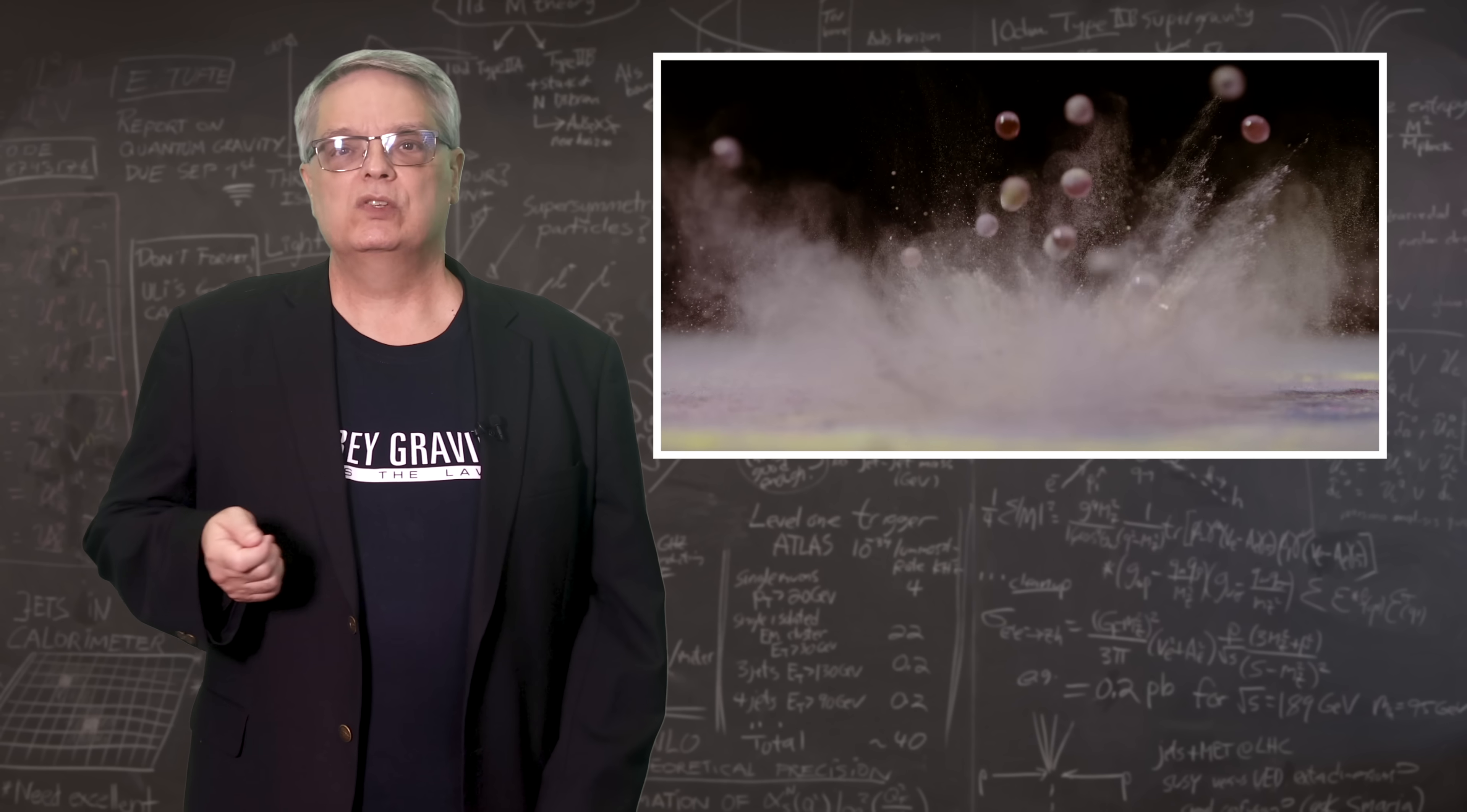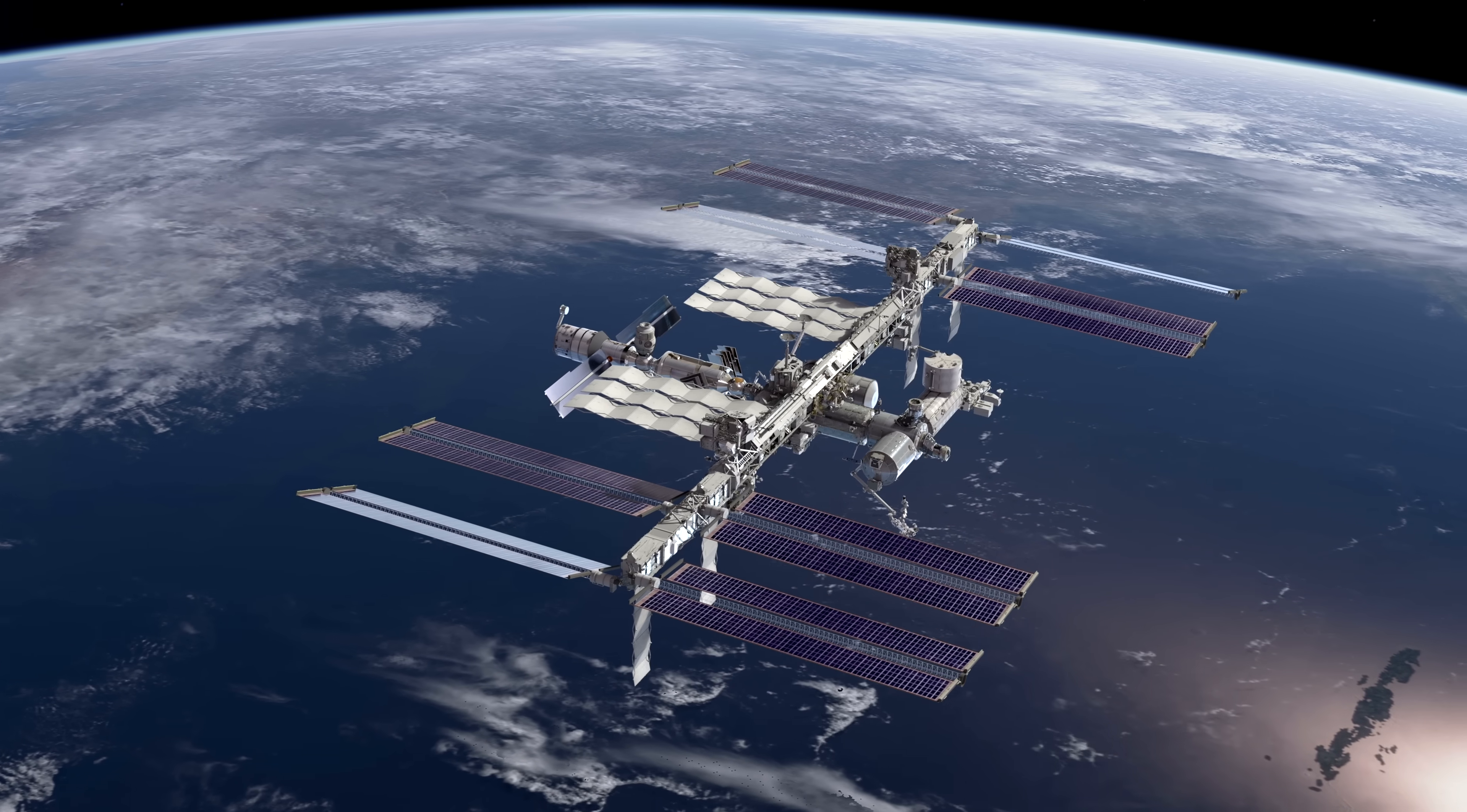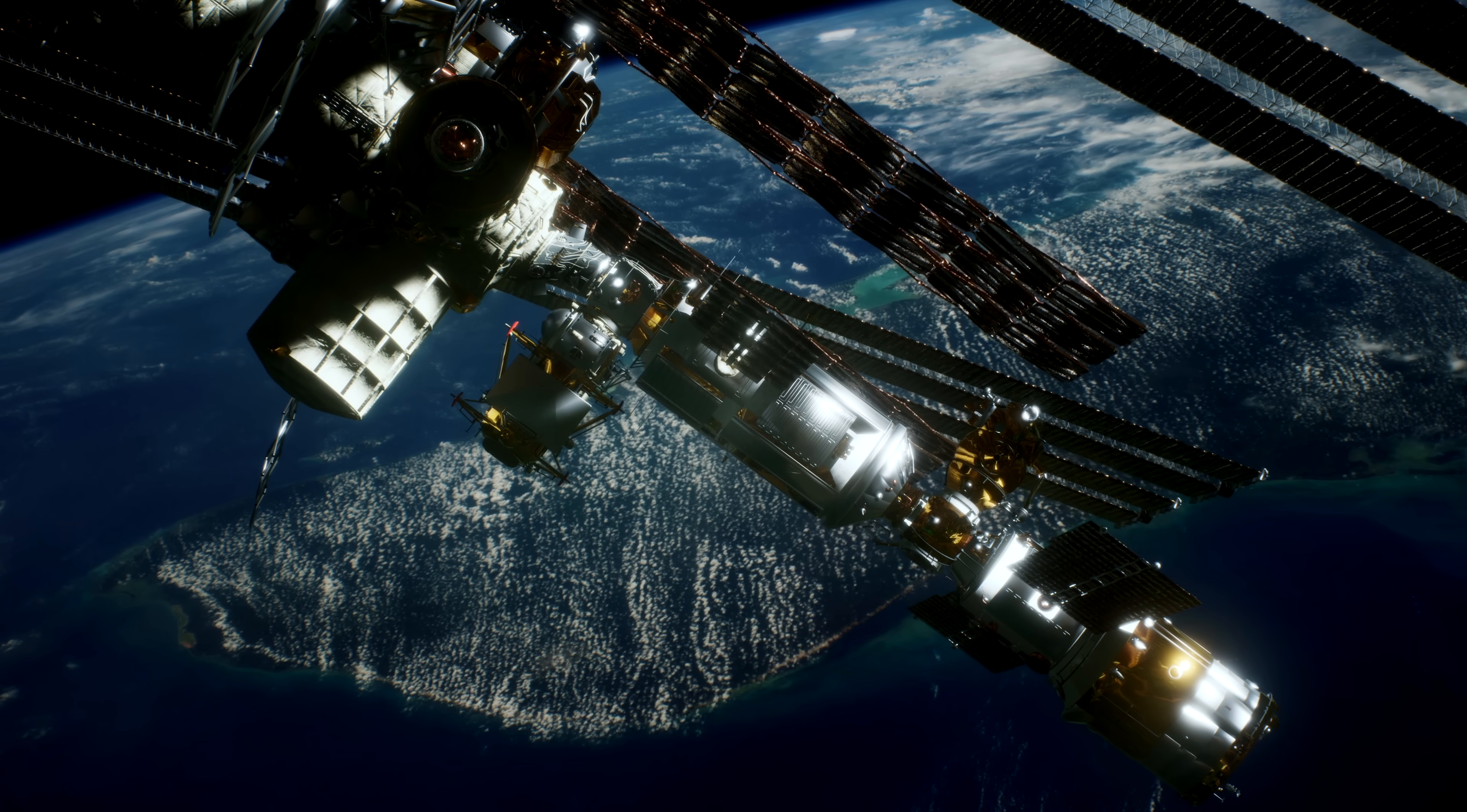But gravity changes with altitude. The International Space Station orbits the Earth about 250 miles or about 400 kilometers above the surface of the Earth. Gravity at the altitude of the space station is only about 90 percent as strong as experienced on the Earth's surface, or about 8.7 meters per second squared for the true physics fans.